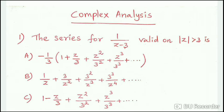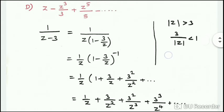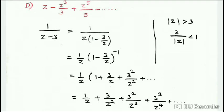First question: the series for 1/(z-3) valid on |z| > 3. We calculate 1/(z-3) equal to 1/z into 1/(1 - 3/z), where the denominator is 1 minus 3/z, and 1/(1 - 3/z) equals (1 - 3/z) whole power minus 1. That is the expansion of 1/z.